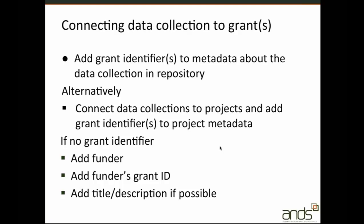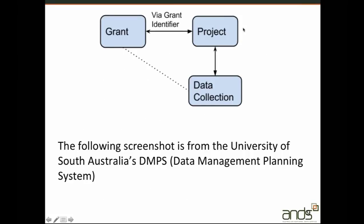This information is useful, and perhaps later when the funder does supply us with grant information we'll be able to match the grant ID and connect it to a PIRL grant identifier. In a research management system which manages all research projects, data collections may be connected to a project, but if the project has the grant identifier we can also make a link between the grant and the data collection — which is very important for funders who want to see the outputs from their research grants.